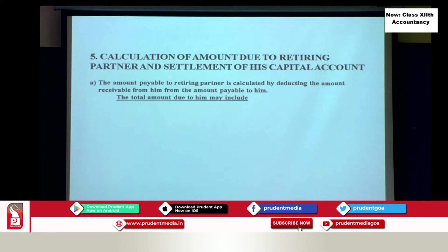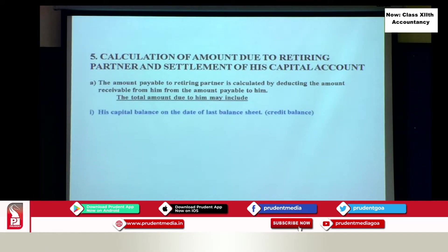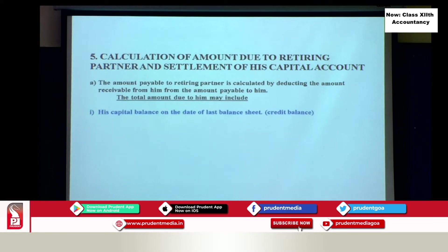Let us see what is the amount payable to him — what are the various shares of a retiring partner when he retires. Of course, we start with the first, that is his capital balance. Suppose he has a credit balance in his capital account at the beginning — that balance he has to get.